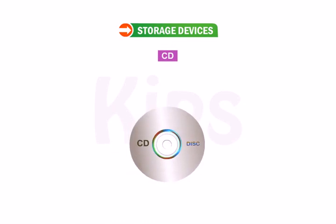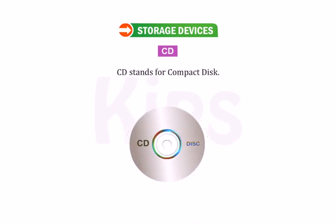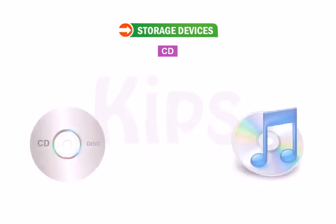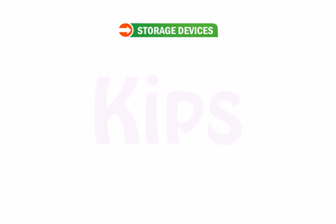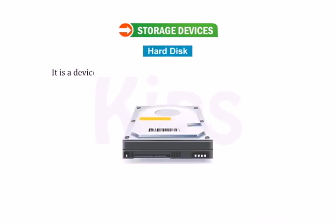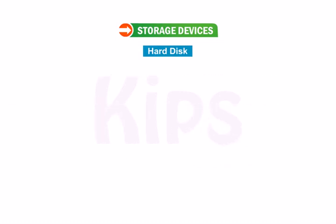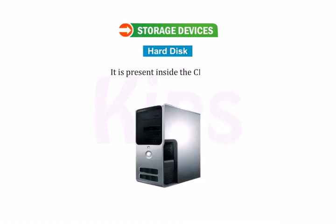A CD, which stands for compact disk, is a round, flat, and shiny disk that stores a lot of information. A hard disk is a device which stores a huge amount of data and information; it is present inside the CPU box.